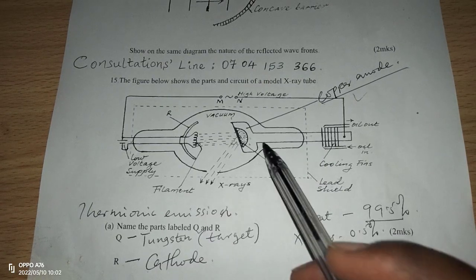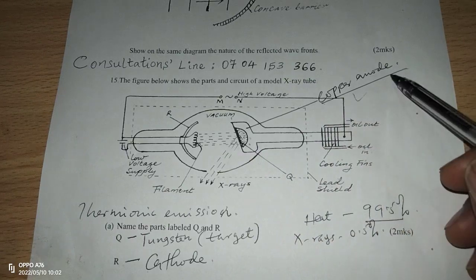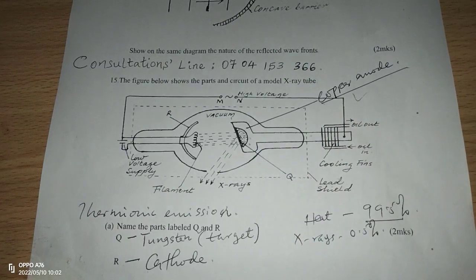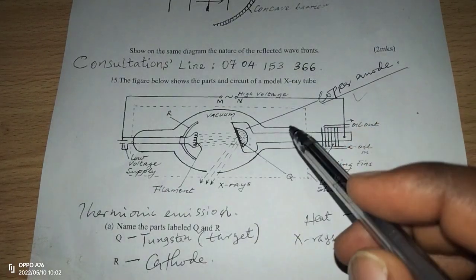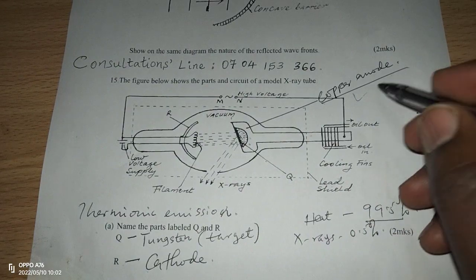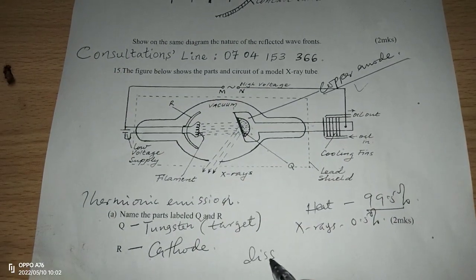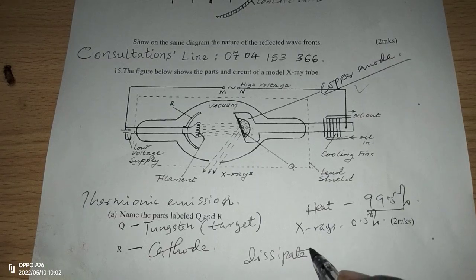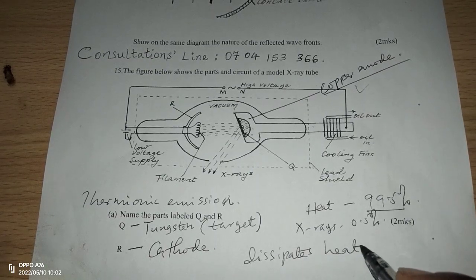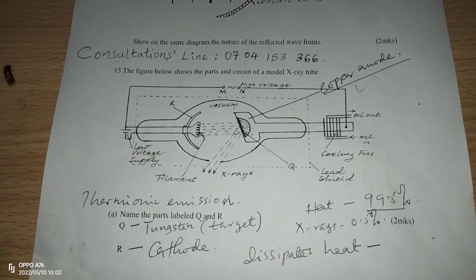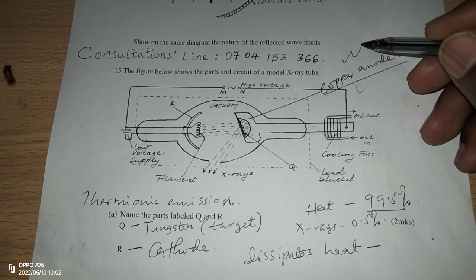We can see that the anode generally is made of copper. The copper anode ensures that the excess heat can be dissipated. The anode dissipates heat. Dissipating is conducting away, so the heat is conducted away by the copper anode.